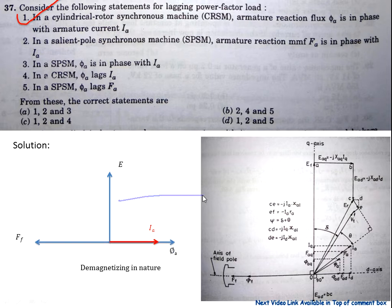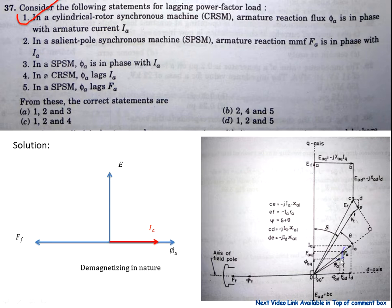That is correct. We know that direct axis reluctance is less than the quadrature axis reluctance. The quadrature axis reluctance is higher and the direct axis reluctance is low. Due to low reluctance, the reactance is very high, and due to high reactance the flux in the direct axis is high as compared to the quadrature axis. So the resultant armature flux is lagged from the armature current by some angle.